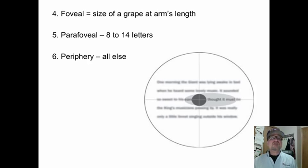When we see, we have what's called a foveal. Hold your arm out, about the size of a grape at arm's length. That is the only part that's really focused and crystal clear, so we have to move about to paint the whole picture.